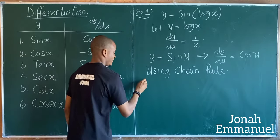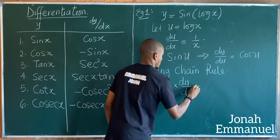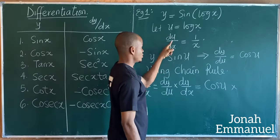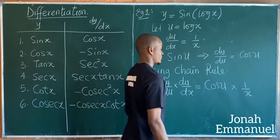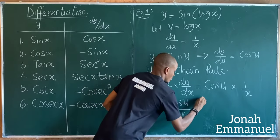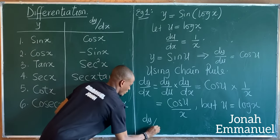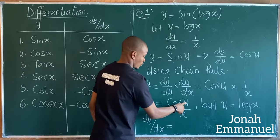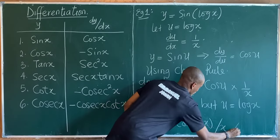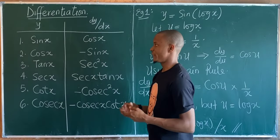Using chain rule, dy/dx = (dy/du) × (du/dx). dy/du is cos(u), and du/dx is 1/x, so that gives cos(u)/x. But we said u is equal to log(x), hence dy/dx = cos(log x) / x. So this becomes my answer: cos(log x) all over x.